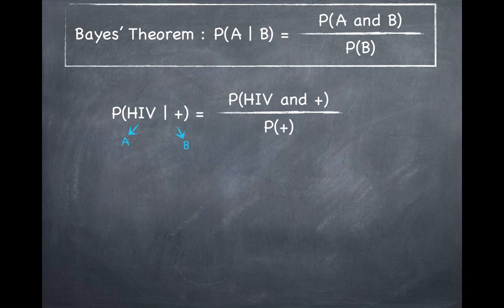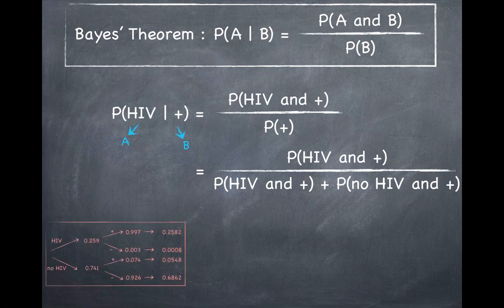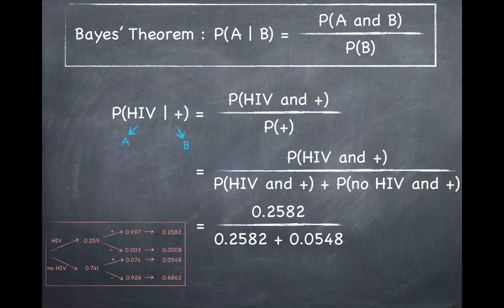We know that there are two types of people who test positive: those who have HIV and those who don't have HIV, due to the fact that the test is not 100% accurate. Since people who test positive could be coming from either of these populations — HIV and positive, or not-HIV and positive — what we want to do is add these two joint probabilities in the denominator. Using our probability tree, the numerator is simply the first branch — HIV and positive — and the denominator is the sum of joint probabilities from the first and third branches, giving us back the conditional probability of 0.82.